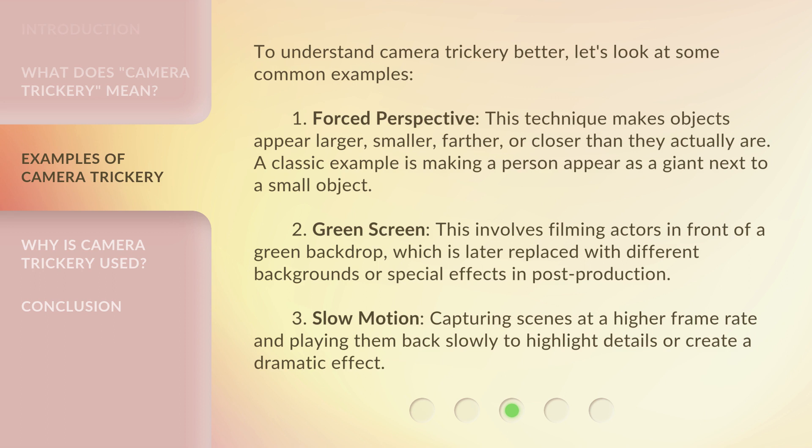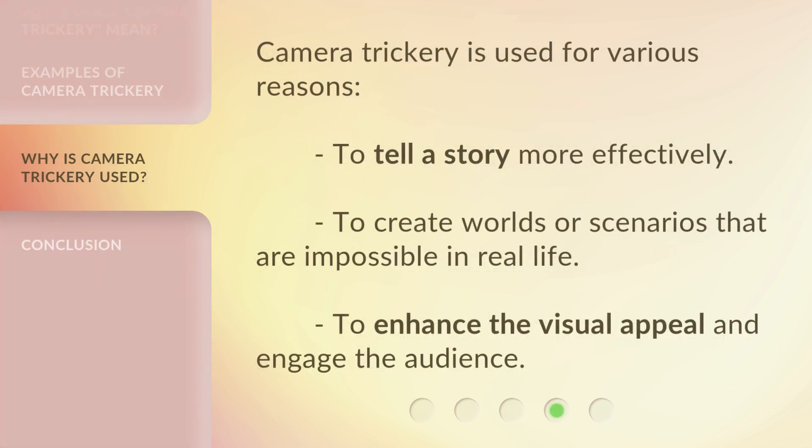Third, slow motion: capturing scenes at a higher frame rate and playing them back slowly to highlight details or create a dramatic effect. Camera trickery is used for various reasons: to tell a story more effectively, to create worlds or scenarios that are impossible in real life, and to enhance the visual appeal and engage the audience.